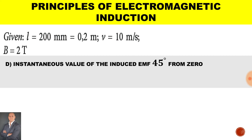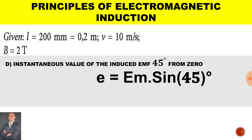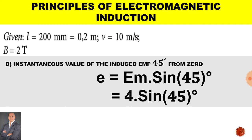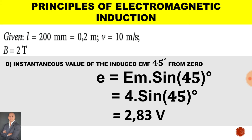To calculate the instantaneous value of the induced EMF 45 degrees from zero: as the coil rotates and passes the point of zero and starts to move towards 90 degrees, the instantaneous value at 45 degrees will be the maximum EMF of 4 volts multiplied by sine 45. Therefore, the instantaneous voltage is 2.83 volts.